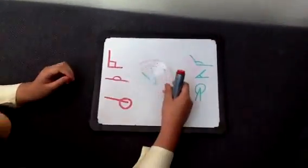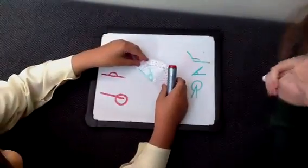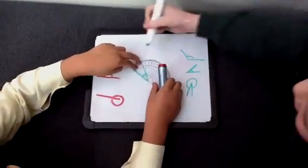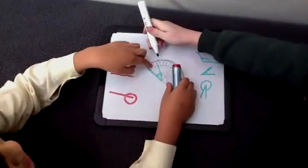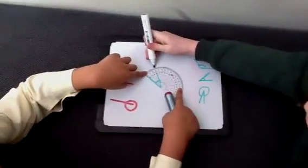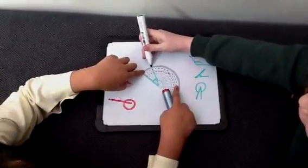Then you get your protractor. And you do the same as what you did with the obtuse. You line up the vertex with the 90 degree angle. But this time we're going to use the outside numbers. And it needs to be under 90 degrees. And there you have 30 degrees.